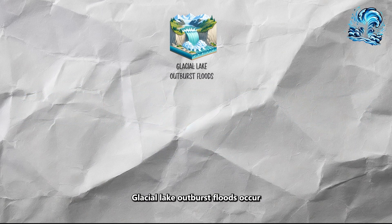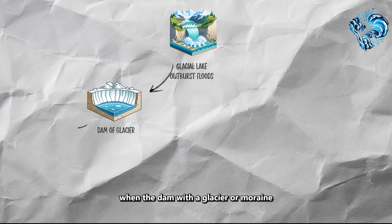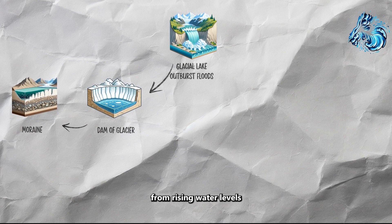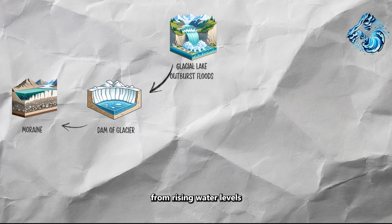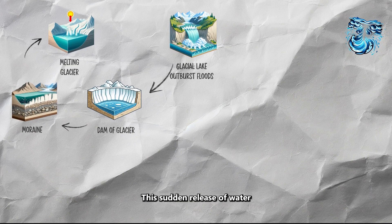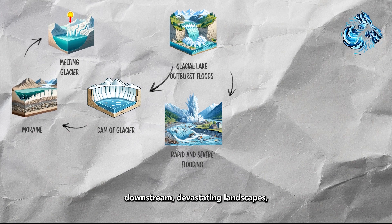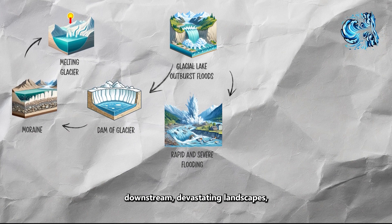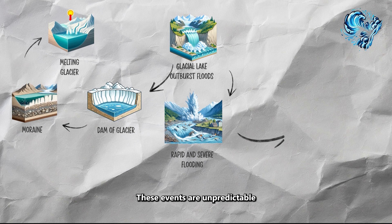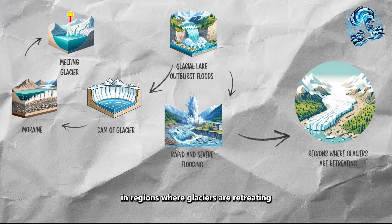Glacial lake outburst floods occur when the dam of a glacier or moraine holding back a lake fails due to increasing pressure from rising water levels, often caused by accelerated glacial melting. This sudden release of water can cause rapid and severe flooding downstream, devastating landscapes, villages, and infrastructure. These events are unpredictable and particularly dangerous in regions where glaciers are retreating.